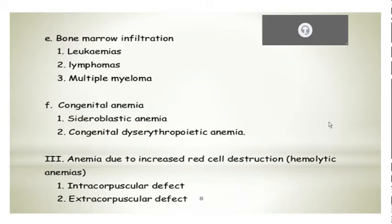So one of the significant congenital anemias is sideroblastic anemia, where you have iron excess and iron is being seen in the RBCs as basophilic stippling. Basophilic stippling is also seen in lead or copper poisoning, because of the excess iron not being used for hemoglobin synthesis or not properly complexed to protoporphyrin in the hemoglobin molecule. So you have an excess of iron present in the RBC and you can have congenital dyserythropoietic anemia.